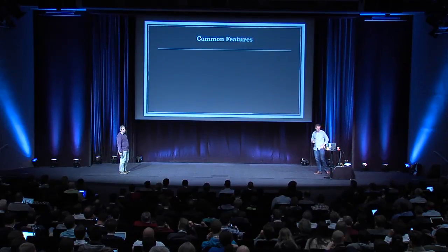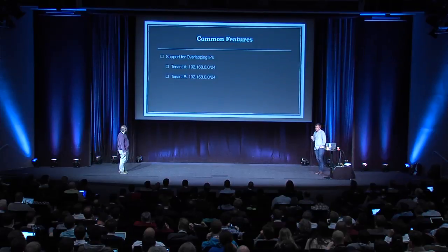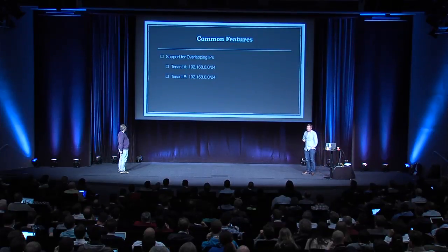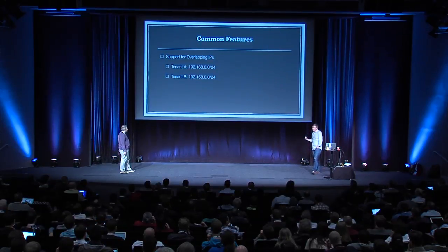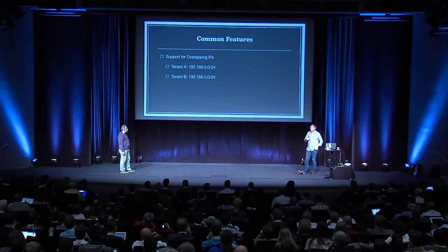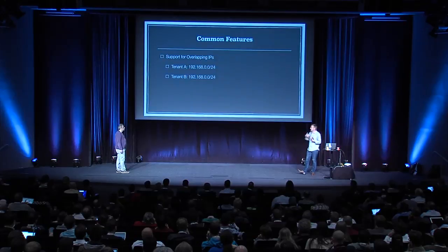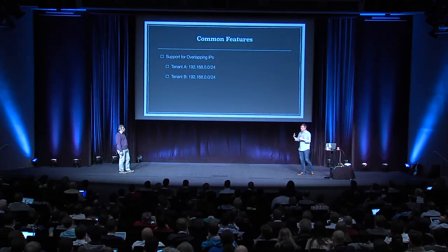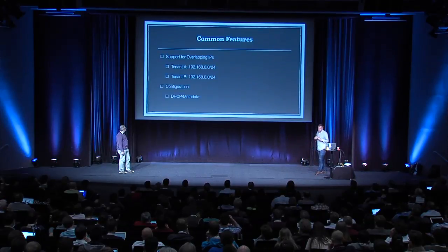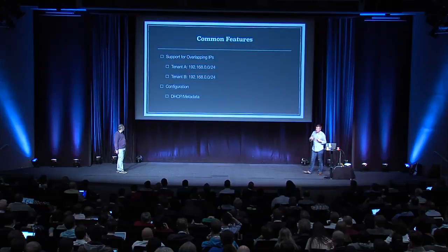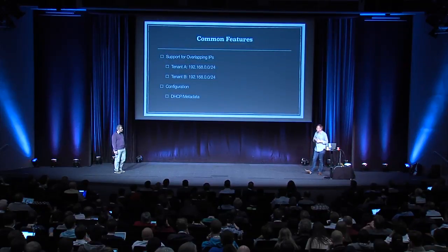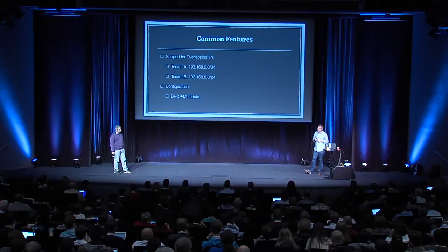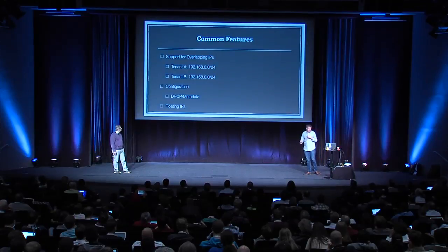When we did that, some common features we baked in include support for overlapping IPs. In a traditional data center, overlapping IPs cause problems in routing, but a use case for overlapping IPs is CI/CD pipelines where you want to stand up the application in the exact environment — two tenants can have the exact same address space. We also have configuration and metadata with DHCP, and we enable support for Config Drive via integration with Nova.